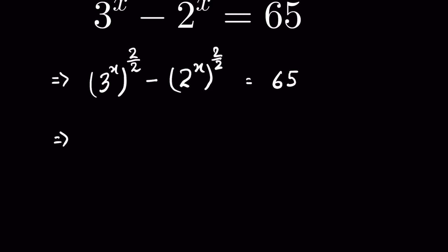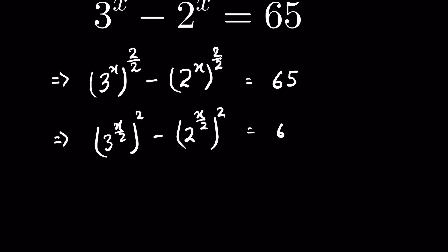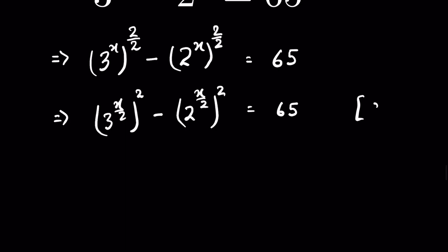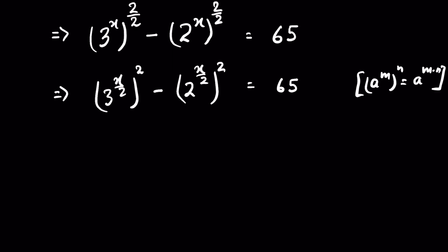We can rewrite this as (3^(x/2))² minus (2^(x/2))² equals 65, because when (a^m)^n, this equals a^(m×n). Now we consider a = 3^(x/2) and b = 2^(x/2).